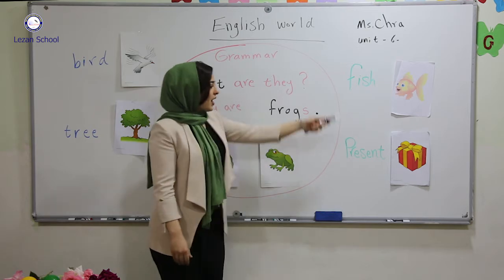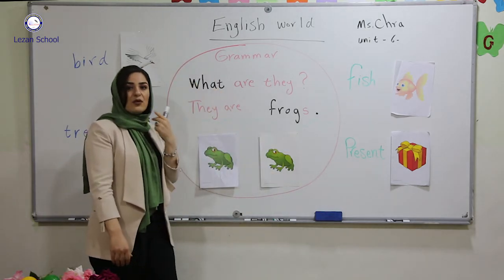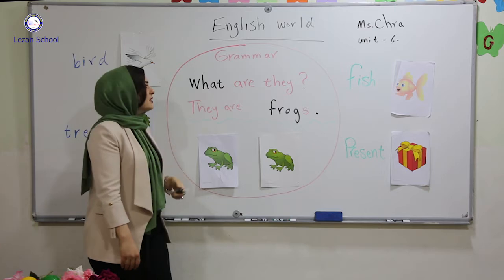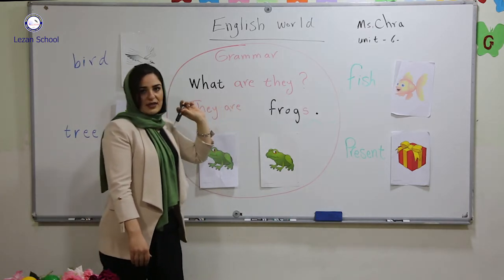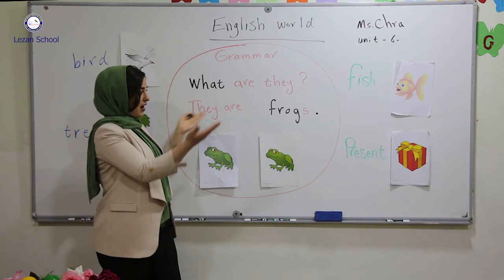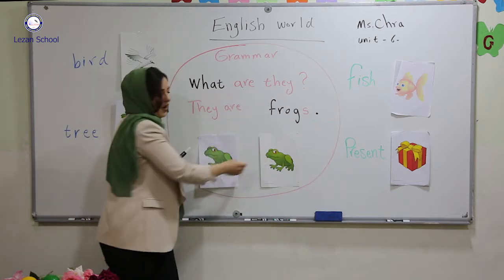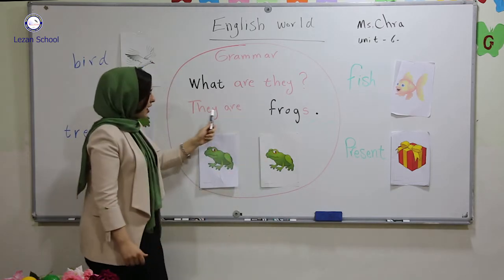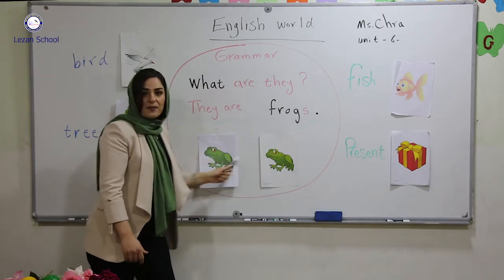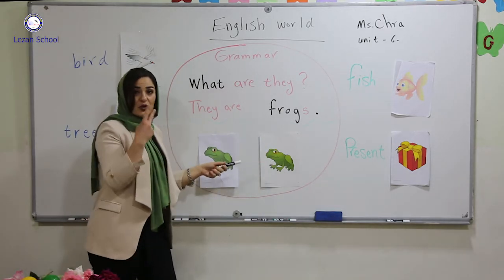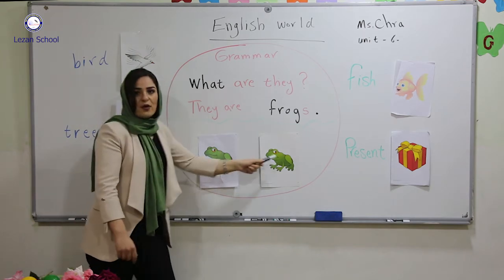How can we use vocabularies in grammar with more than one? When someone asks you, 'What are they?' — they are froggies. Because we have two froggies, you say 'they are froggies.'